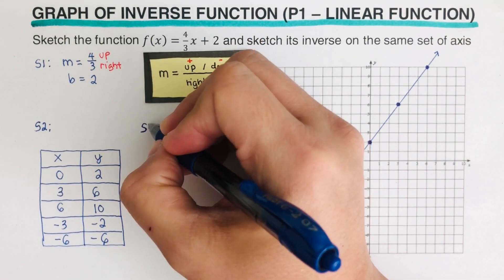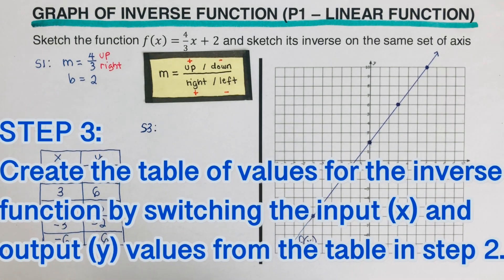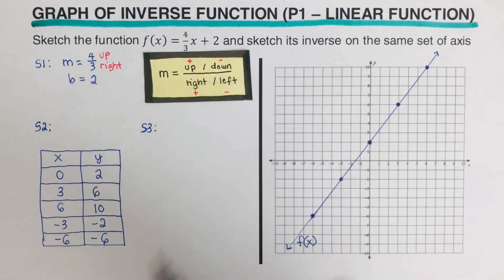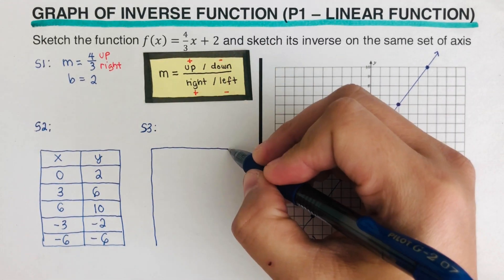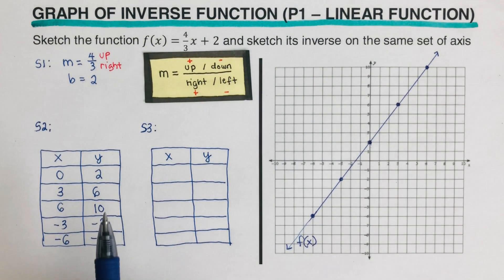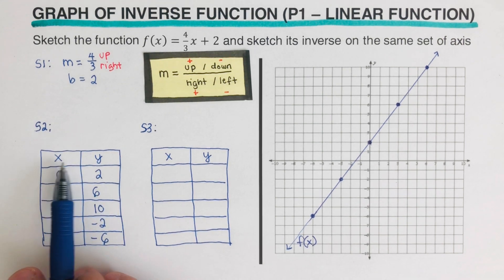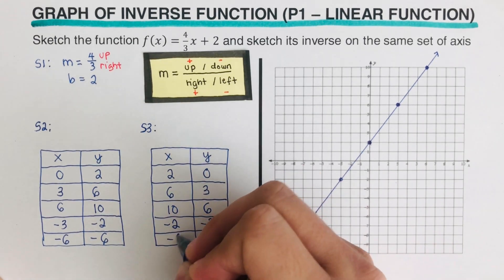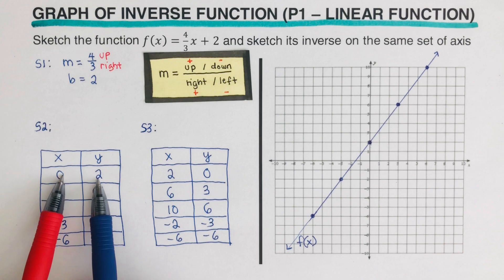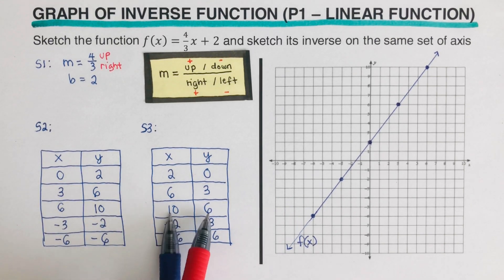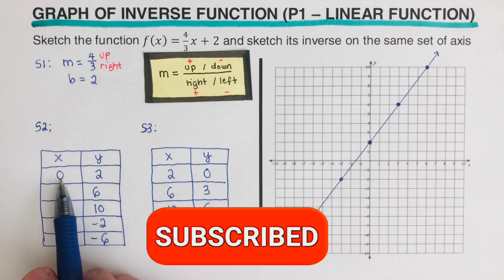Now we move to step three: create a table of values for the inverse function by switching the input x and the output y values from the table in step two. So we create the same table but switch the x and y values — x becomes y and y becomes x.